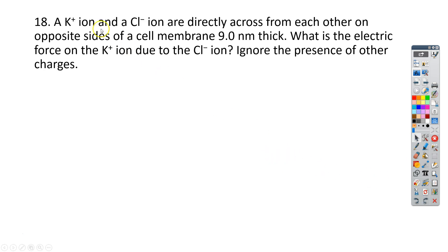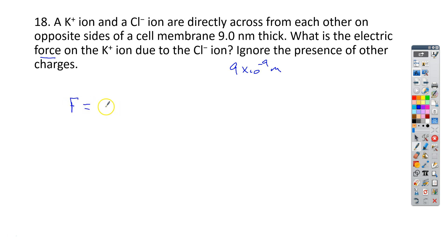For number 18, we have a potassium and a chlorine ion directly across from each other on opposite sides of a cell membrane. The cell membrane is 9 nanometers thick — remember that's 9 times 10 to the negative 9th meters. We want to know what is the electric force on the potassium ion due to the chlorine ion. This is an attractive force, so we write F equals negative k times q1 times q2 (absolute values) all over r squared.